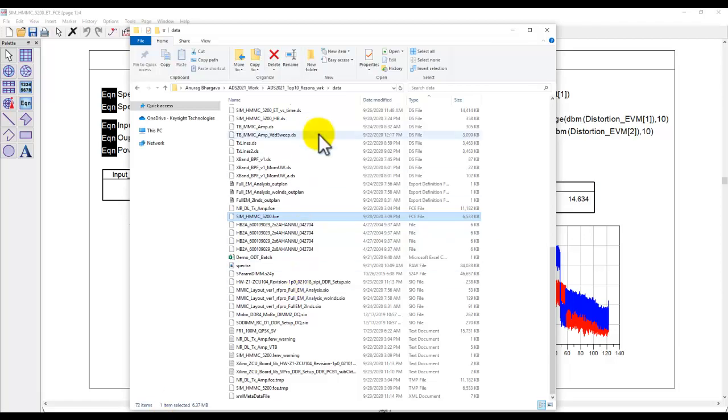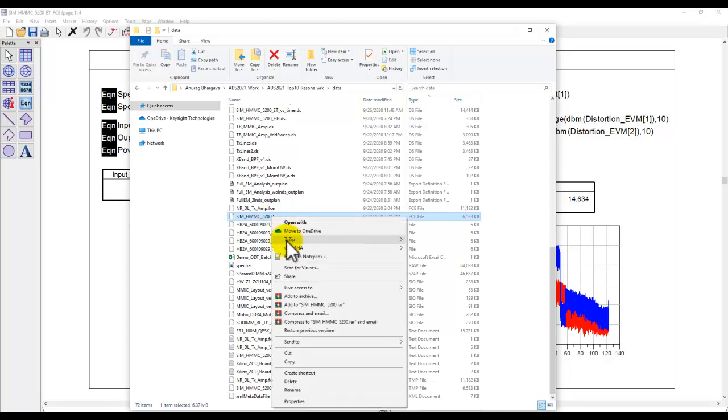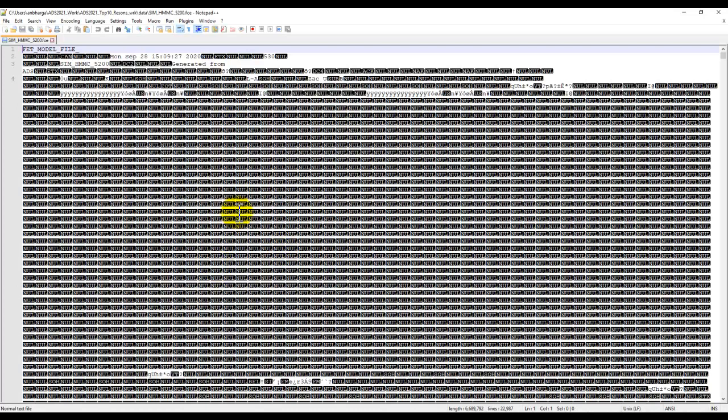Once the simulation finishes, inside the data folder of the workspace you are working in, you will have .fce file generated. And this file, if you try to open in a notepad editor, you can't see anything. All the IP is protected because it's a binary file format, as I said earlier.